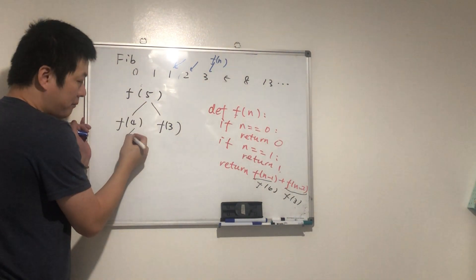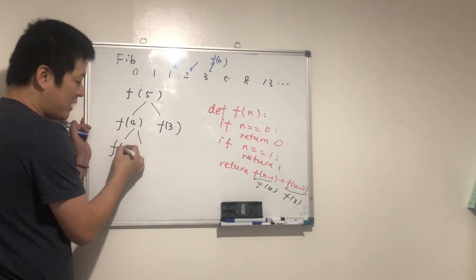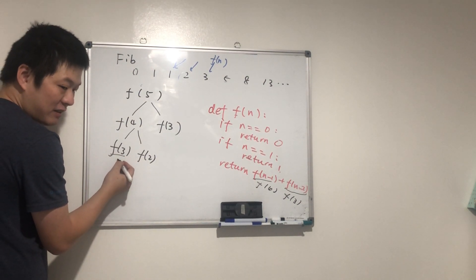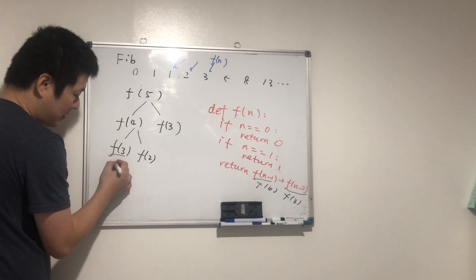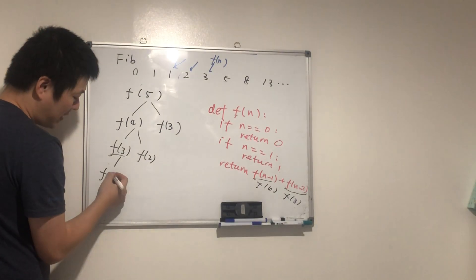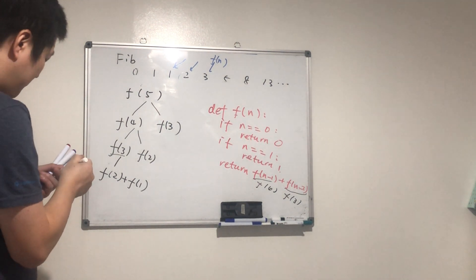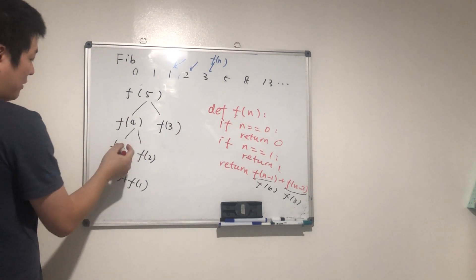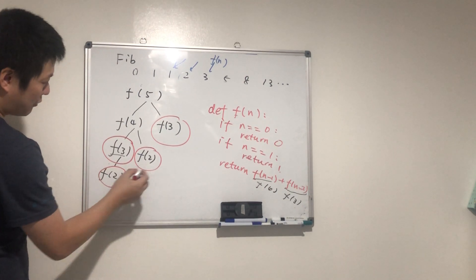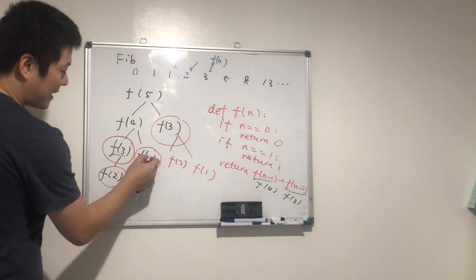To calculate f(4), we need f(3) and f(2). To calculate f(3), we need f(2) and f(1). Do you find the problem here? f(3) is calculated twice! And f(2) is also calculated multiple times. So there's redundant computation happening.